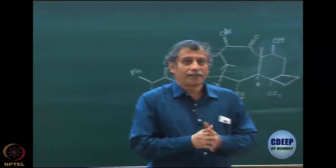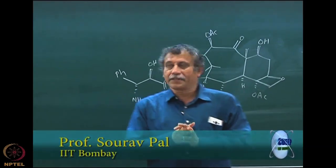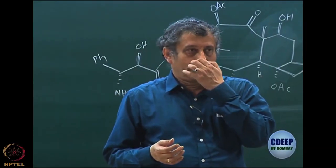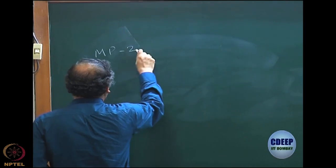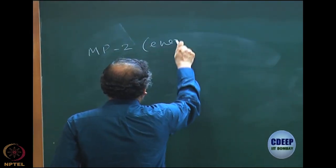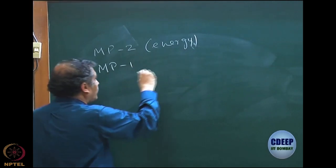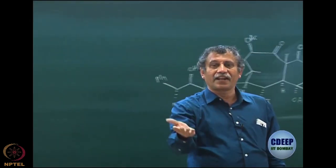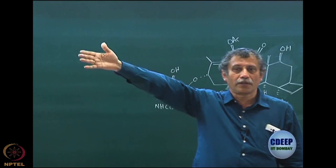Let me again summarize what we said in the last class before we move to the next topic. Configuration interaction: we saw in perturbation theory that up to second order, from the MP2 description, when we say MP2 it is for energy. But the wave function actually starts at MP1, because the first order correction corrects the wave function at first order, and hence the energy corrects at second order, because we have the formula E₀² = <ψ⁰⁰|V|ψ⁰¹>.